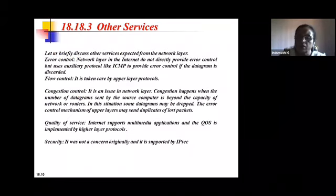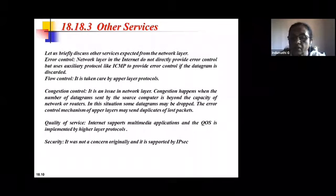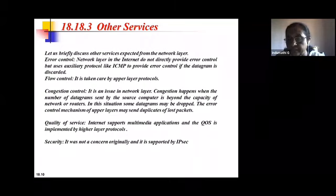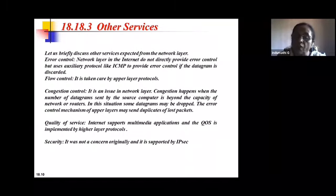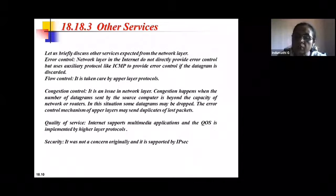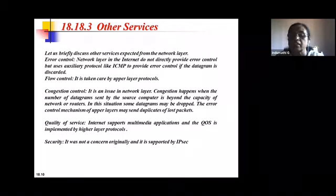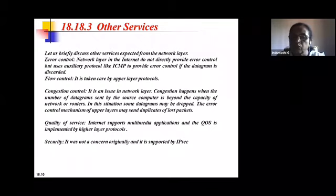In summary, the three important functions of the network layer are: packetization — converting information from the upper layer into a datagram by adding header information; routing — selecting the optimal route or path using routing protocols; and forwarding — directing a packet from the input interface to the correct output interface using the forwarding or decision table.